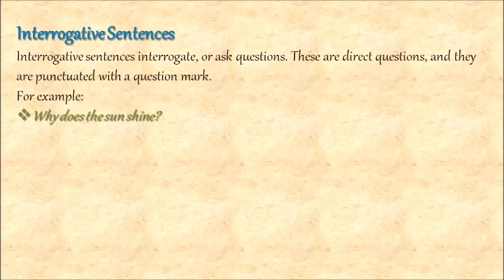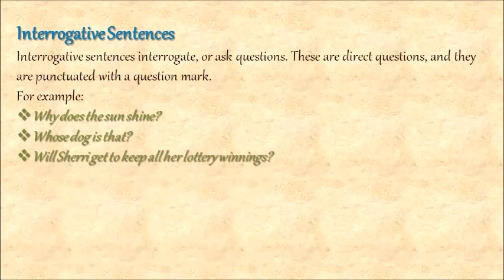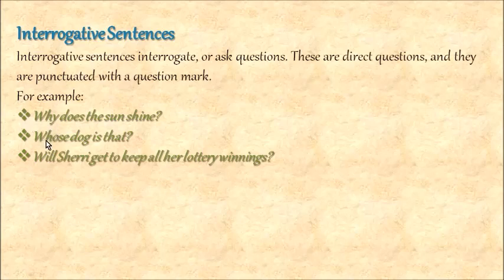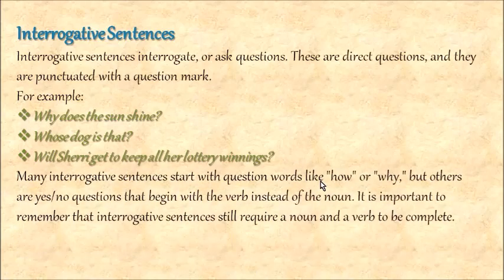Examples include: whose dog is that? And: will Shuri get to keep all her lottery winnings? The first two sentences begin with WH words — why, whose. But the third sentence begins with a verb: will. Many interrogative sentences start with question words like how or why. Others are yes/no questions that begin with the verb instead of the noun. Let's learn this properly.